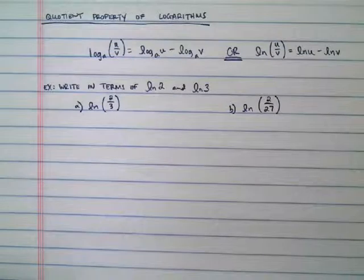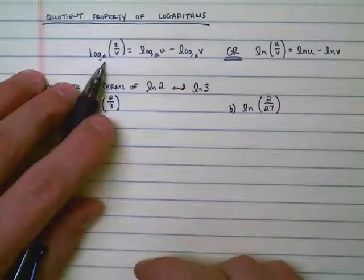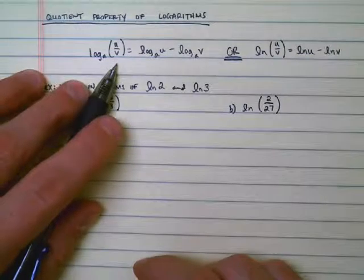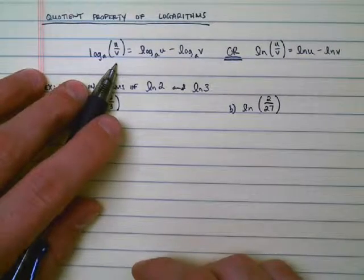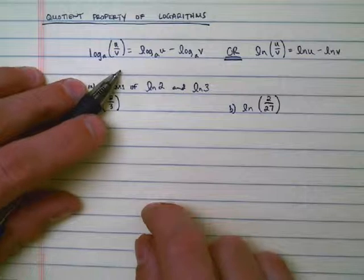The quotient property says this: If I have a logarithm base a of u divided by v, whatever u and v are - they can be variables, they can be constants, it doesn't matter - I can rewrite it like this.